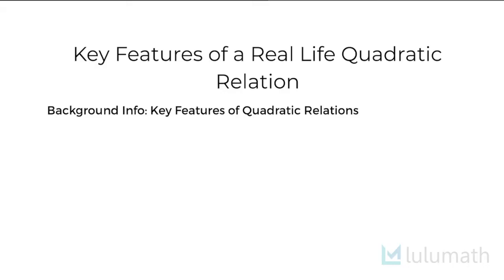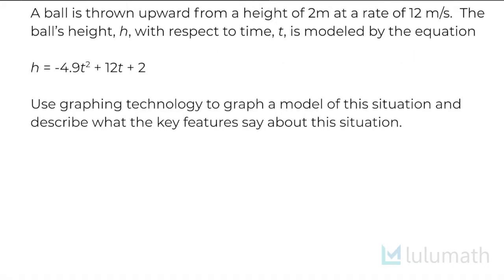So in this example, a ball is thrown upward from a height of 2 meters at a rate of 12 meters per second. The ball's height h with respect to time t is modeled by the equation h = -4.9t² + 12t + 2. And it tells us that h is the height, but I just want to specify that this is being measured in meters. And we know that the t is the time and I just want to specify that this is being measured in seconds.